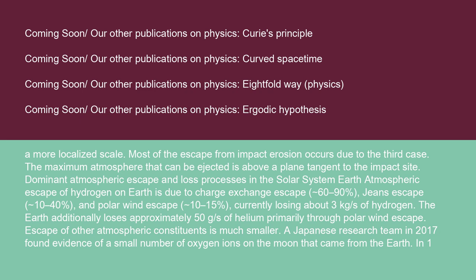The maximum atmosphere that can be ejected is above a plane tangent to the impact site. On Earth, atmospheric escape of hydrogen is due to charge exchange escape (60–90%), Jeans escape (10–40%), and polar wind escape (10–15%), currently losing about 3 kg per second of hydrogen. The Earth additionally loses approximately 50 g/s of helium, primarily through polar wind escape. Escape of other atmospheric constituents is much smaller.